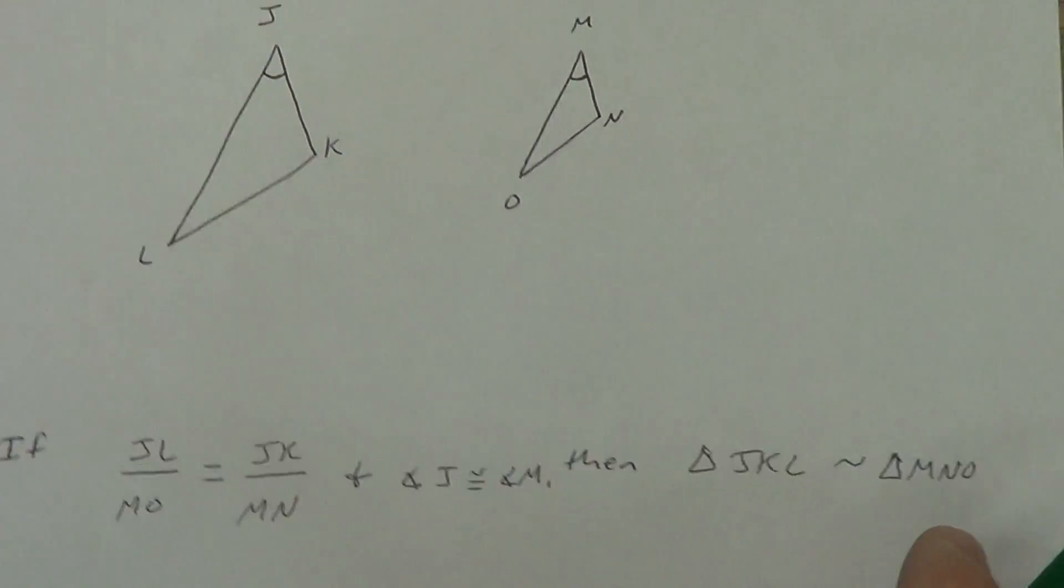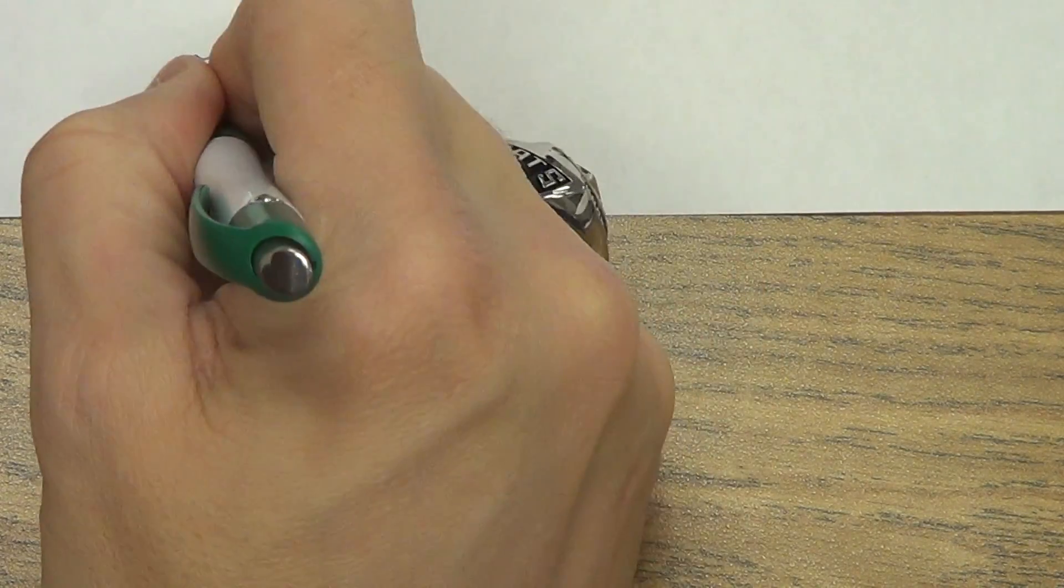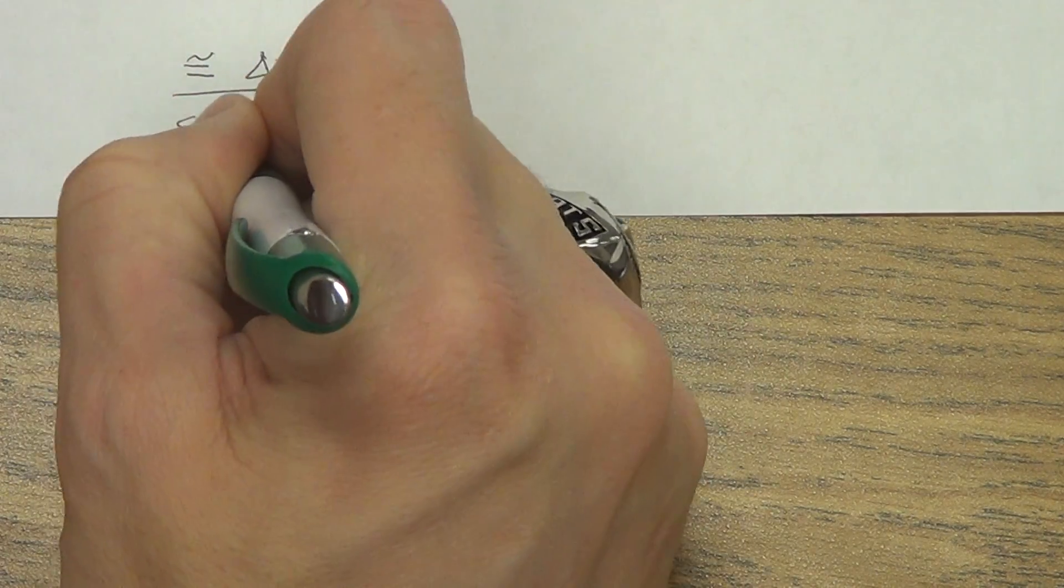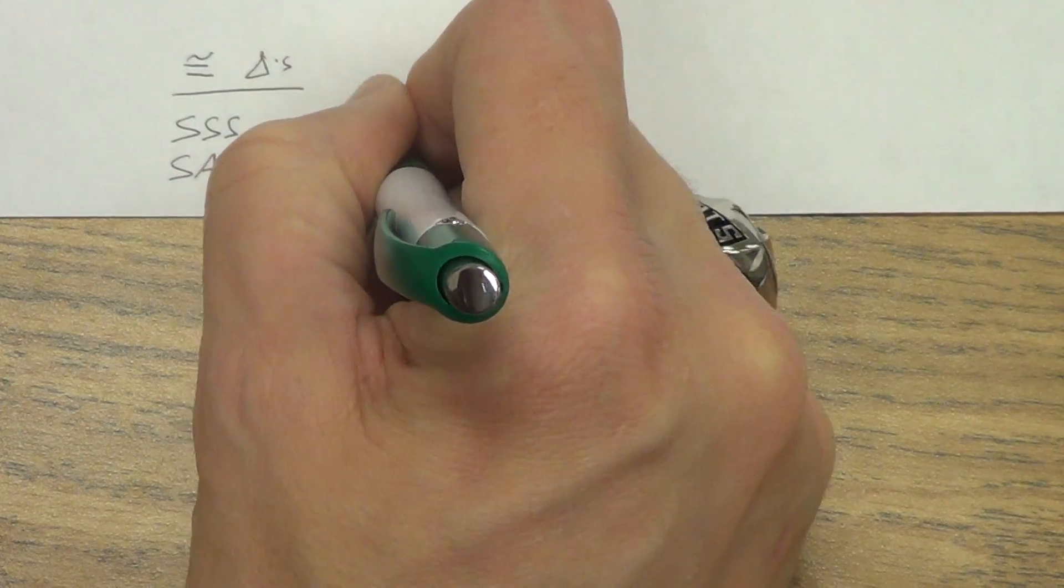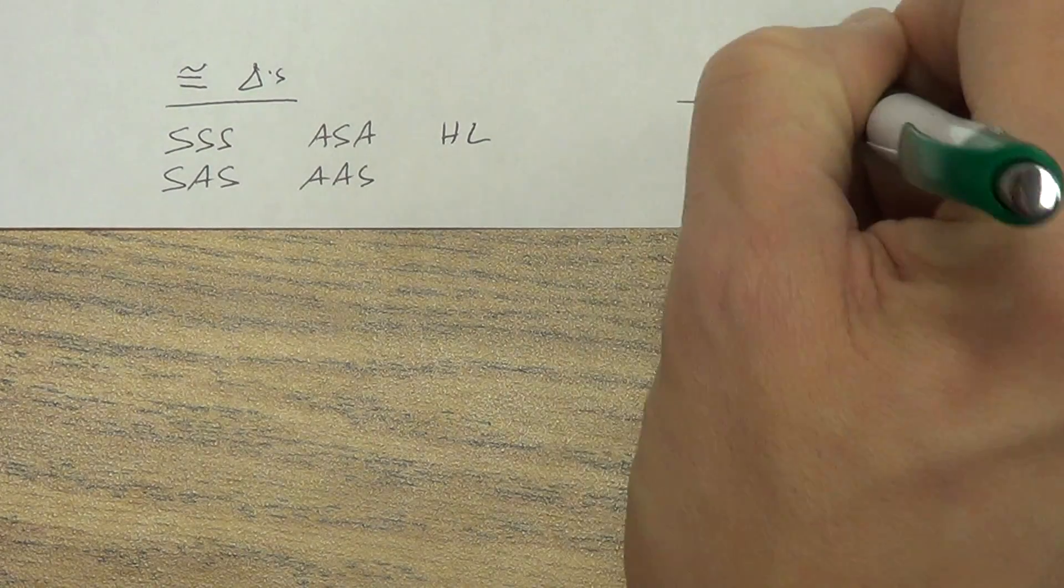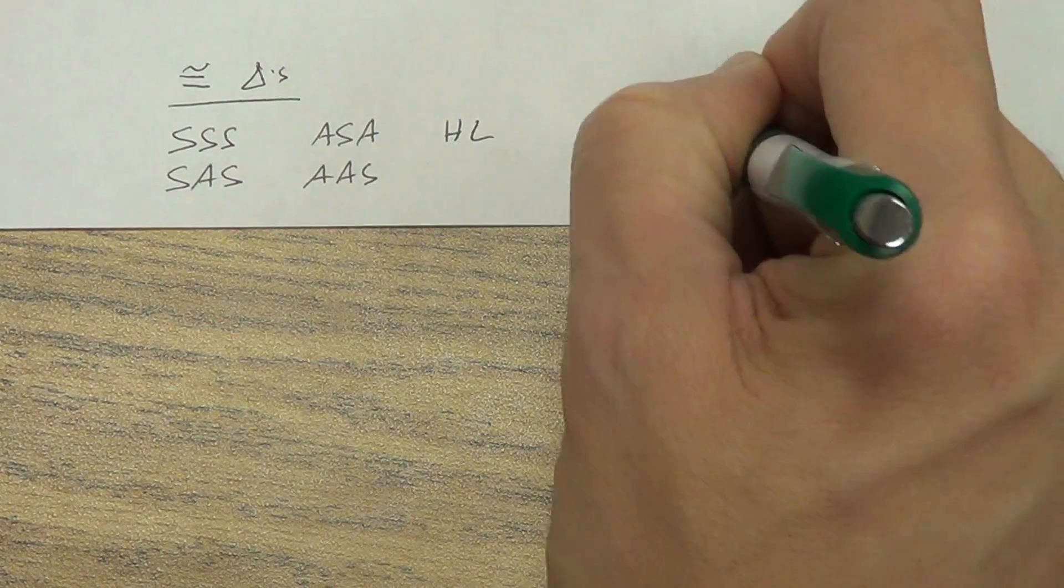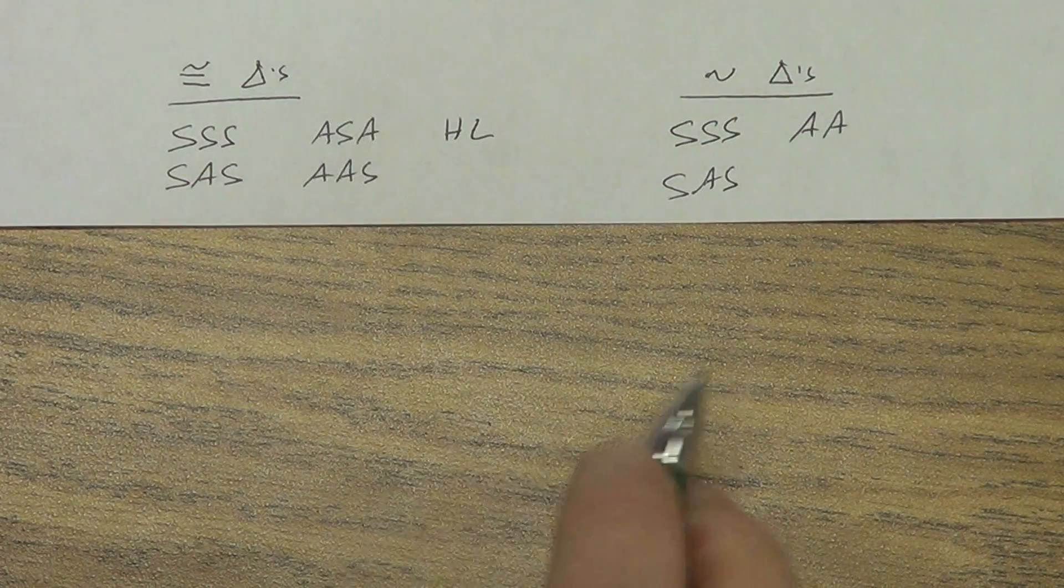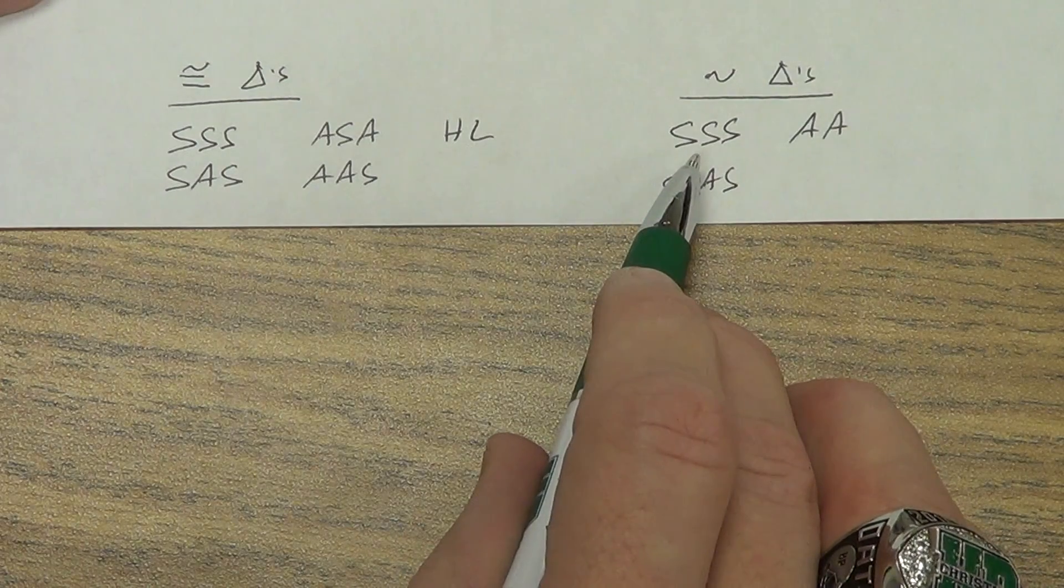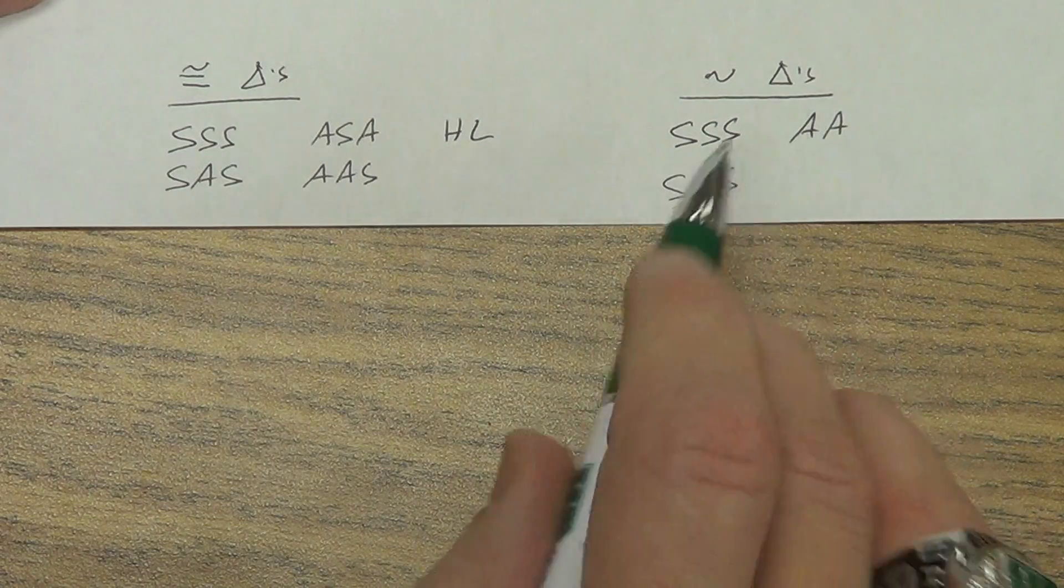Before we finish this video, I want to talk about a couple things where some people might get a little confused. If you think back to the congruent triangles, we had side-side-side, side-angle-side, angle-side-angle, angle-angle-side, and we had HL. You guys remember all that? Now, with similar triangles, we only have three. Remember we started with AA? And today, we learned side-side-side, and side-angle-side. I want you to see how these match up. Here we had side-side-side, we got side-side-side. Side-angle-side, we got side-angle-side. Over here, they were postulates. However, over here, they're theorems.